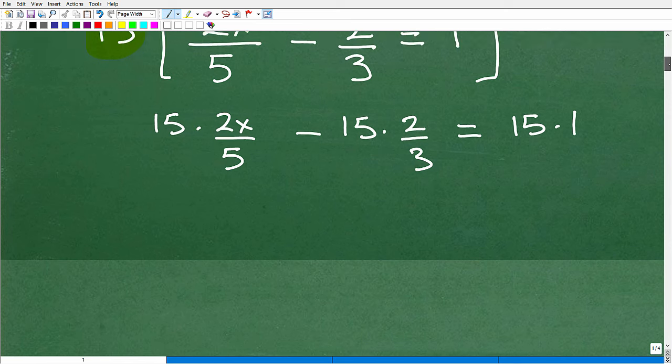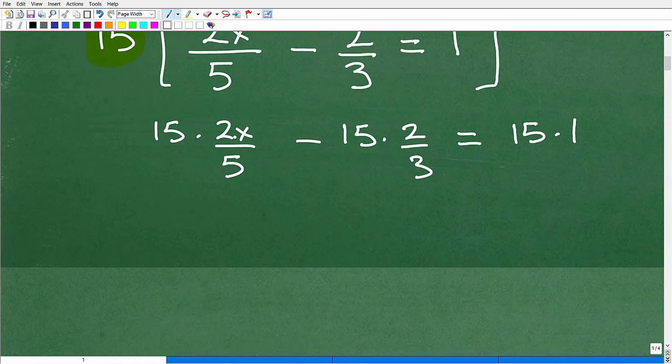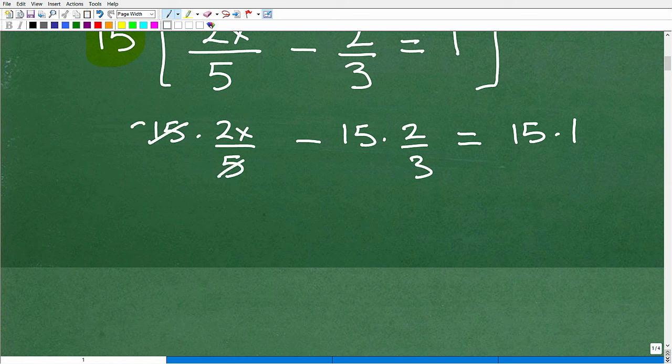So, let me scroll down here. All right. So, 15 times 2x over 5, excuse me, is going to be what? Well, 5 goes into 15, 3. So, 3 times 2x is going to be 6x. Or you can win 15 times 2. That's 30 divided by 5. That's 6x minus 3 goes into 15 right here. That's going to be 5. So, 5 times 2 is 10. Or 15 times 2 is 30 divided by 3 is 10, equals 15 times 1 is 15.